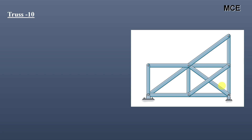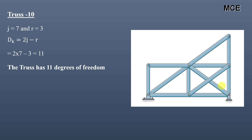For truss ten, this truss has a total of seven joints and three support reactions. The value of dk for this truss is 11, meaning this truss has 11 degrees of freedom.